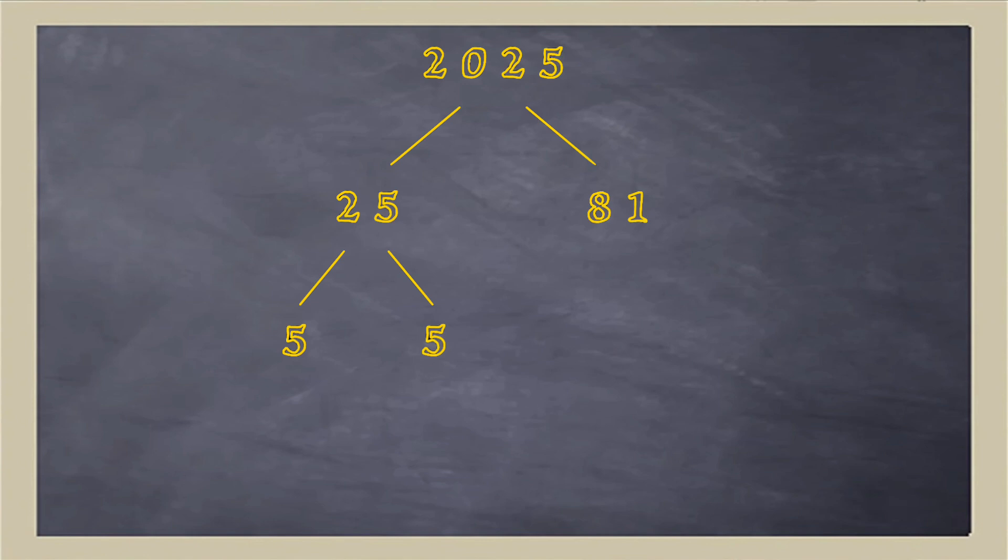And it's prime numbers that we're looking for to see what 2025 is built from. Now, let's try the 81. Nine times nine. Let's try the nine. Three times three. And let's try it on the three. Oh, not working. There's another prime. Let's try it on the other nine. And there we are. That's us done. We've found all the ingredients of 2025.